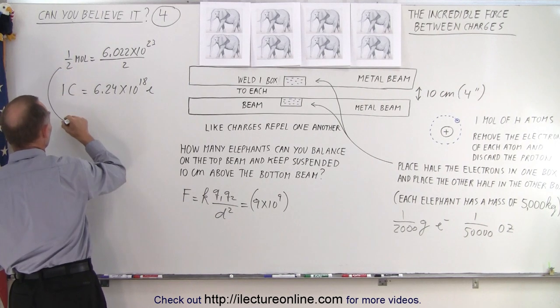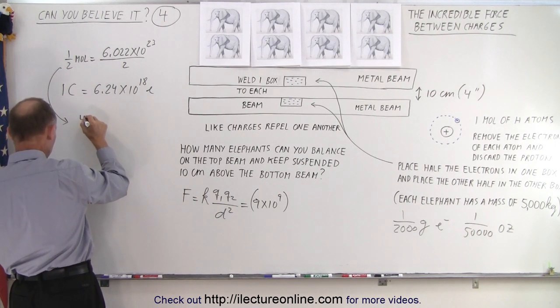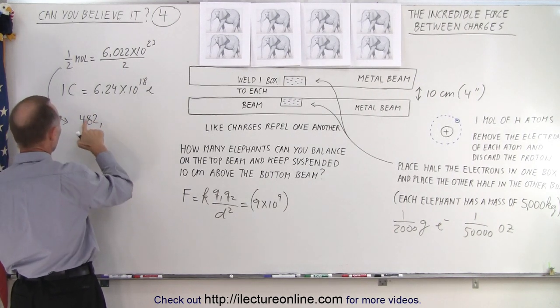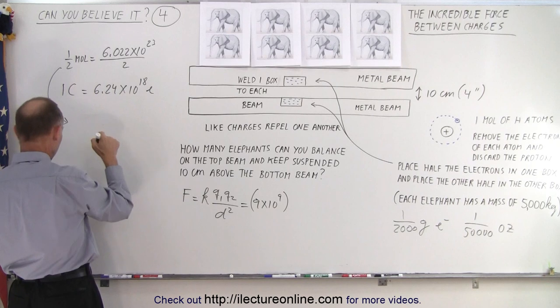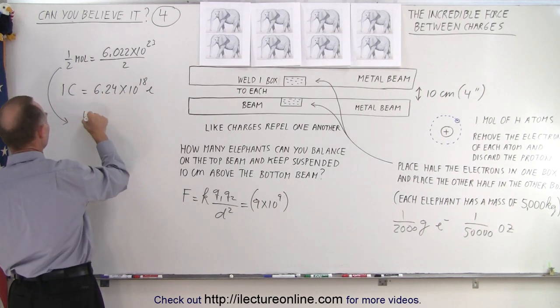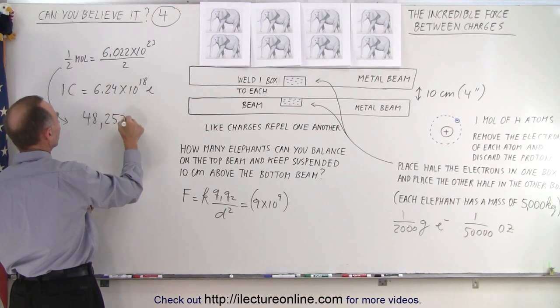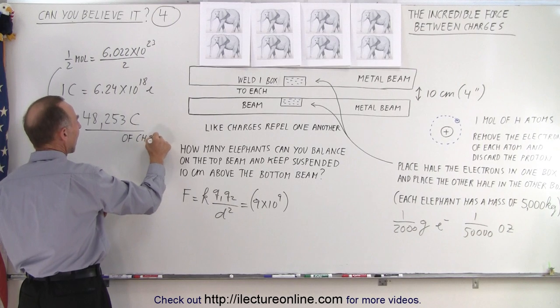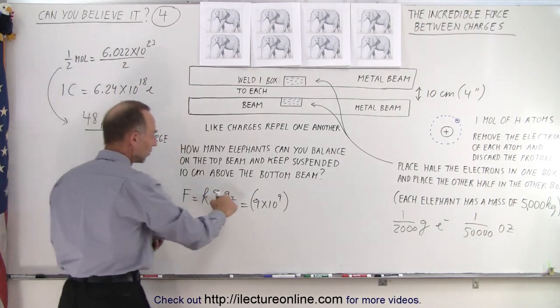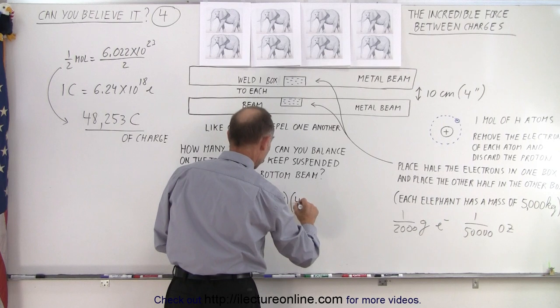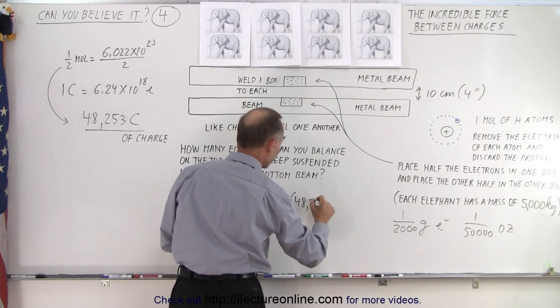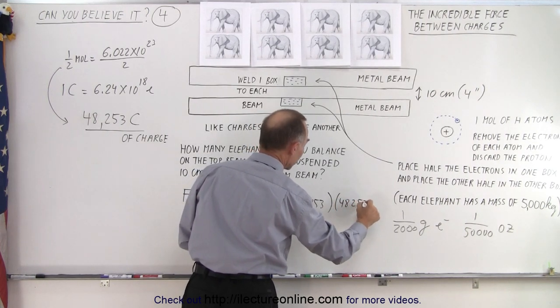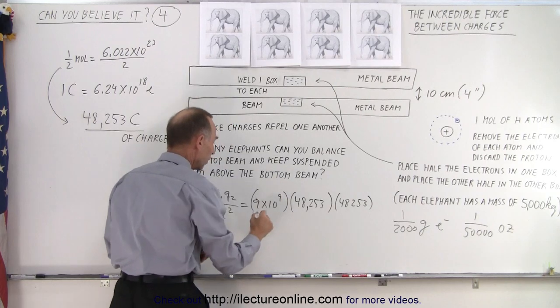That is equal to a half a mole equals 482,500... oh, I'm wrong. Not 482,000, looks like 48,253. Alright, 48,253 coulombs of charge by taking a half a mole of electrons. So that means my two charges are 48,253, and I multiply that times 48,253, because you have to multiply the charges of the two boxes.